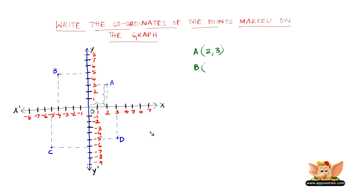We can see that the distance of B from the y-axis is 4 units, and the distance of B from the x-axis is 5 units. Since it lies in the second quadrant, its coordinates are (-4, 5).